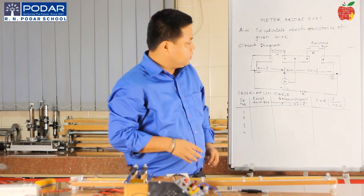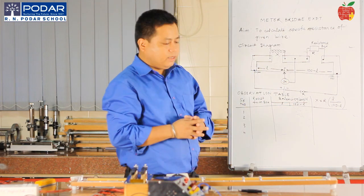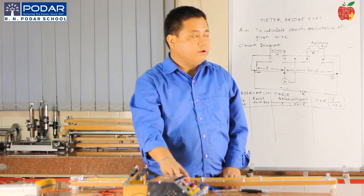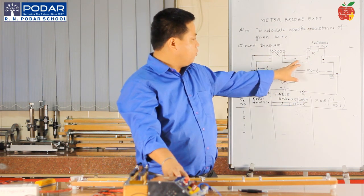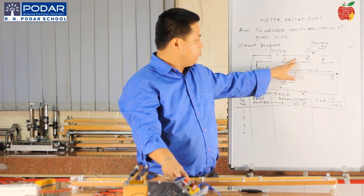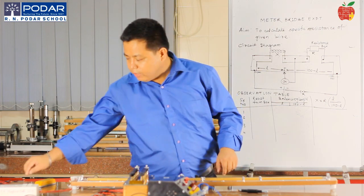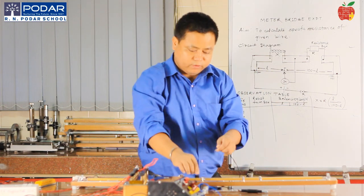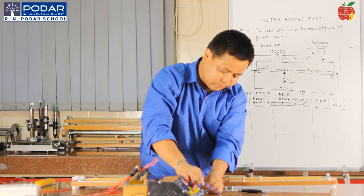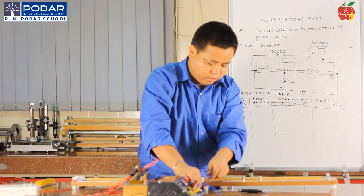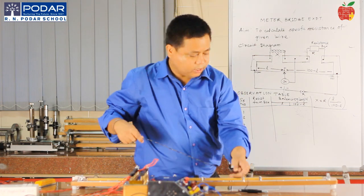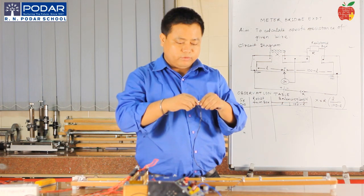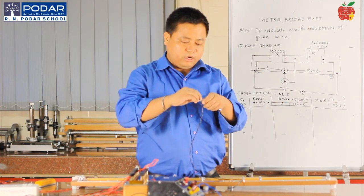First we will see the circuit diagram and make the circuit accordingly. You see that the galvanometer is connected to the middle point. We will take a long wire and connect it to the galvanometer first. The galvanometer is then connected to a pointer called the jockey — this is the jockey pointer which is used to find the null deflection point.